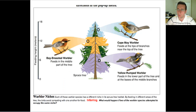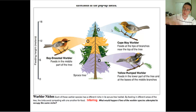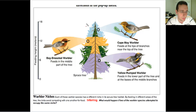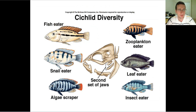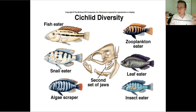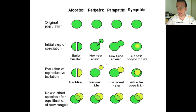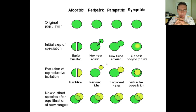Another example is warblers — they live in the same tree without geographical separation, but because they have different niches within the same population, it led to differentiation between the species. The same is true for the cichlid diversity. This is an example of sympatric speciation taking place in nature. Speciation can happen with physical separation or without, and in our next video we'll review these concepts and discuss other advanced speciation processes.